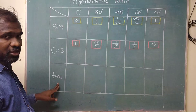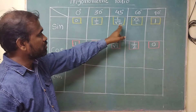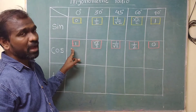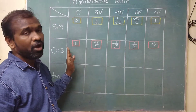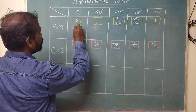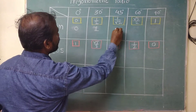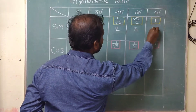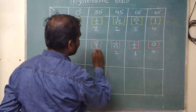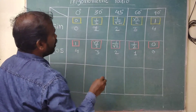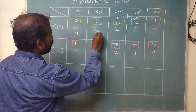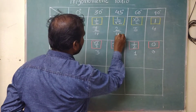These are the values which we have to memorize, but in this video I will tell you how to remember without memorizing these values. First we will write 0, then 1, then 2, then 3, then 4. Now again 0, 1, 2, 3, and 4. After writing these numbers, we have to divide each number by 4.